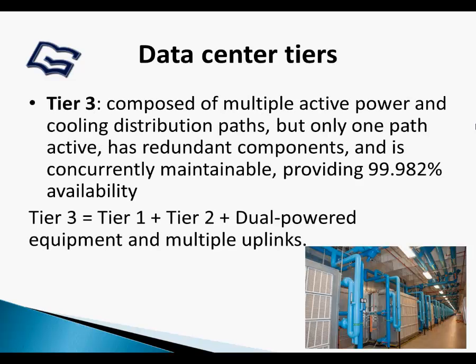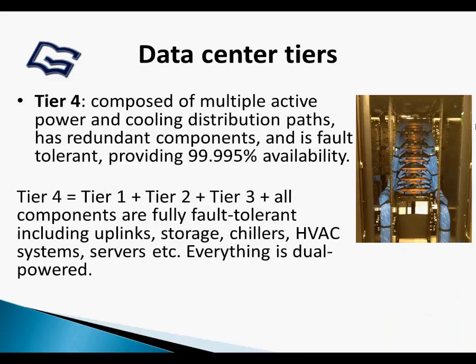Tier 3 is composed of multiple active power and cooling distribution paths, but only one path active, has redundant components, and is concurrently maintainable, providing 99.982% availability. Tier 4 is composed of multiple active power and cooling distribution paths, has redundant components, and is fault-tolerant, providing 99.995% availability.